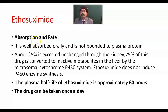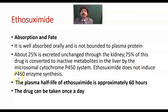Regarding absorption and fate of ethosuximide: it is well absorbed orally and is not bound to plasma proteins. About 25% is excreted unchanged through the kidney, and 75% of this drug is converted to inactive metabolites in the liver by the microsomal cytochrome P450 system, but ethosuximide does not induce this system. The plasma half-life is very prolonged — approximately 60 hours — so this drug can be taken once a day.